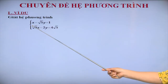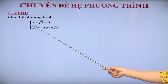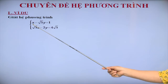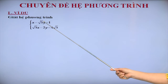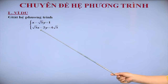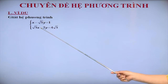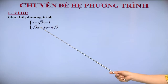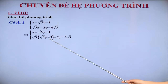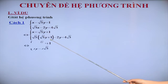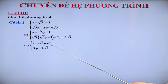Quan sát phương trình thứ nhất, cô thấy hệ số của X ở đây là 1. Bằng cách rút X theo Y từ phương trình thứ nhất, rồi thế vào phương trình thứ 2, cô sẽ được một phương trình một ẩn. Bằng cách chuyển vế và thu gọn, cô sẽ giải được phương trình này.